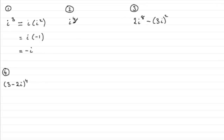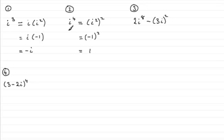When it comes to number 2, i to the power 4 — well, we can think of this as i squared, all squared. i squared we know is minus 1. And so we've got minus 1 all squared, which is clearly going to be 1. You could also do i cubed times i: i cubed we've seen is minus i, and if you times that with another i, you're going to get minus minus 1, which is going to be 1.